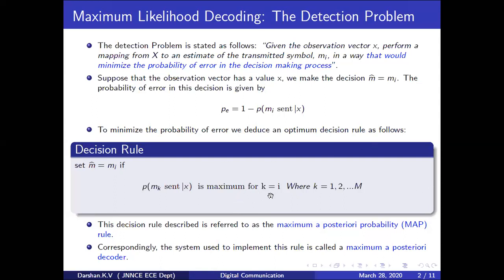So based on this particular rule, we are going to refine it so that it could be easily implementable in the receiver. Any implementation should be very much easier. This particular rule, as I told yesterday, is called the maximum a posteriori probability rule — maximum comes in the decision rule because we are calculating a metric for a maximum value, and the metric is probability. A posteriori means some event needs to have happened — that is why it is called a posteriori probability.